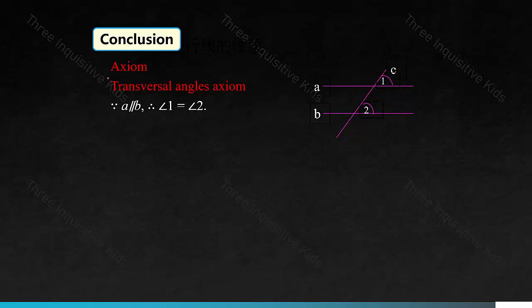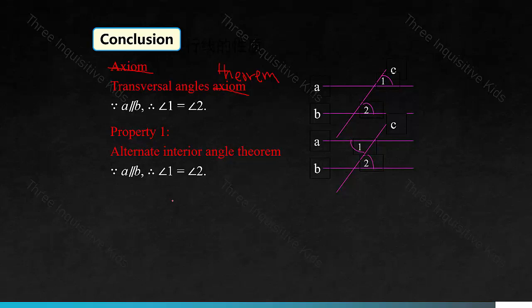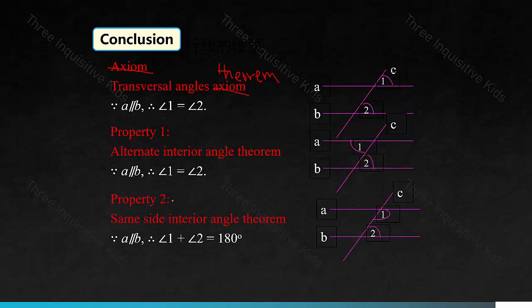This is a transversal angles axiom, but now since we've switched it, it's not an axiom anymore — it's a transversal angles theorem. Property 1: because A is parallel to B, therefore angle 1 equals angle 2. The same side interior angle theorem: because A is parallel to B, therefore angle 1 plus angle 2 equals 180 degrees. You can use these theorems later on when you're doing harder problems.